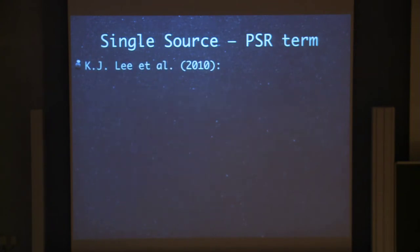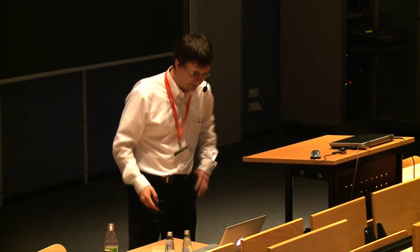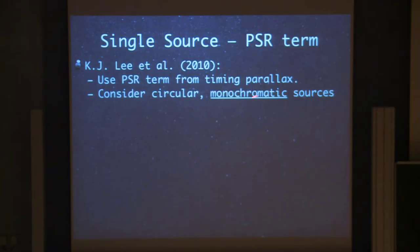Then another paper on single source detection, all in the same year. KJ Lee at the Max Planck in Bonn wrote the following one, and he also used the pulsar term, but instead of deriving the pulsar distances, he actually gets the pulsar distances independently. And so this inherently assumes you have the Square Kilometer Array with a large sensitivity, large enough that you can measure the parallax of the pulsars through timing. And then when you know the distance of the pulsar, it's much easier to get the pulsar term as well. They restricted themselves to monochromatic sources, which you may argue about whether that is a smart thing to do or not, but the principles hold, and again only circular.